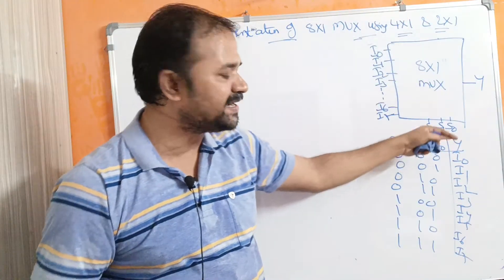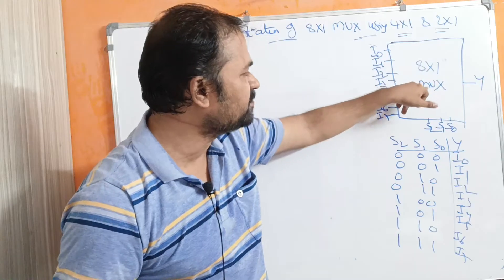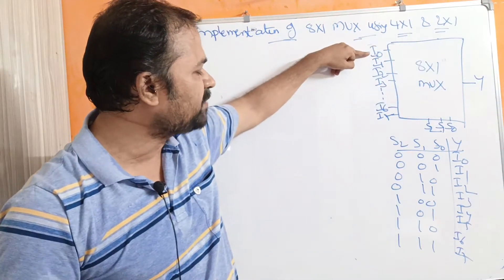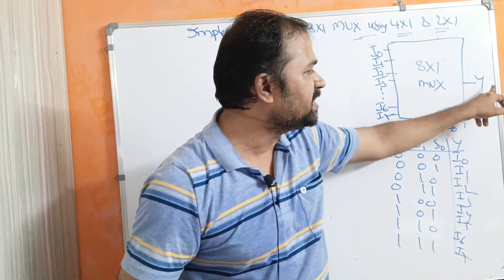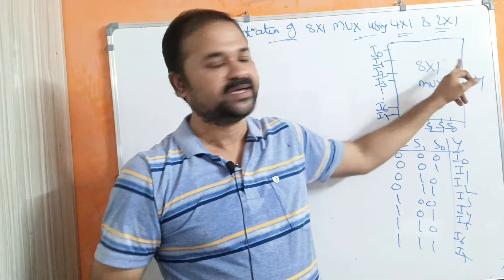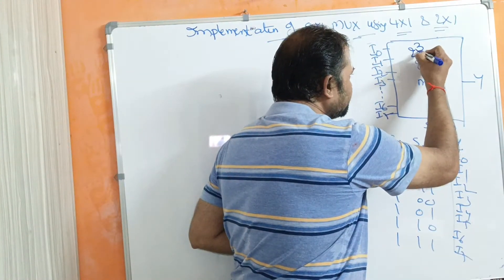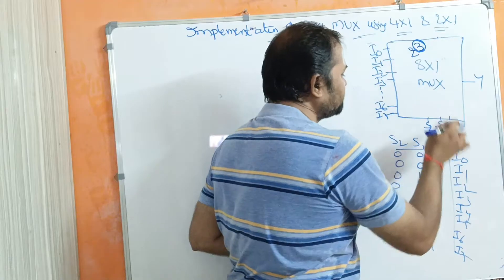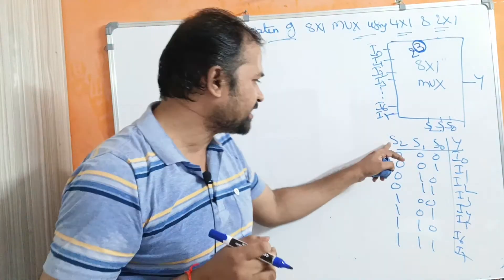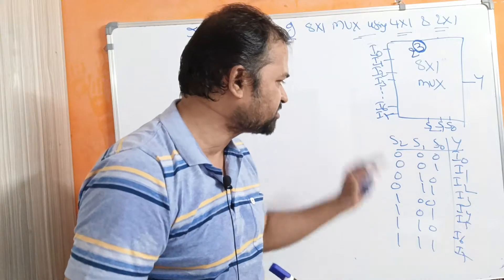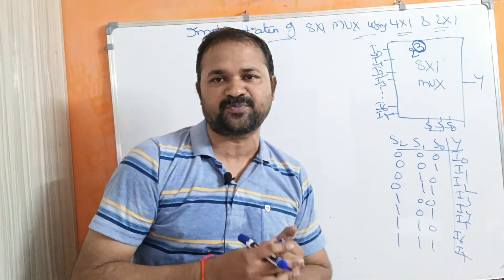First, let us see the block diagram and truth table of the 8 by 1 multiplexer. The 8 by 1 multiplexer accepts 8 data inputs from I0 to I7 and produces only 1 output. Since 8 equals 2 to the power of 3, the 8 by 1 multiplexer has 3 selection inputs: S0, S1, and S2. The output depends upon the selection inputs.